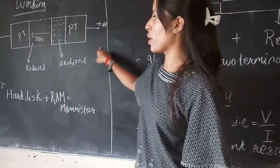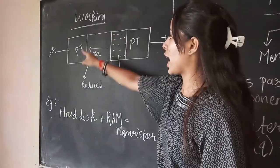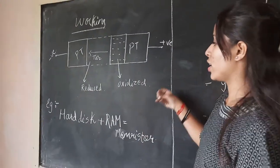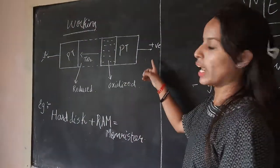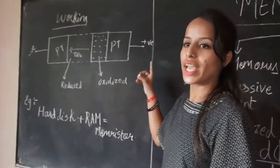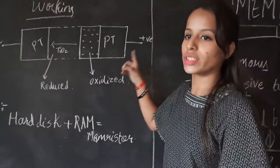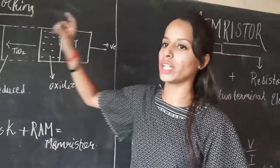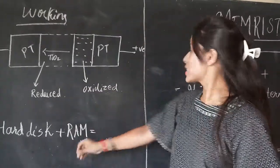Here is the working of memristor. This is the actual diagram of the working in which when we apply the voltage, it makes the oxygen vary from the positive point to the negative point.